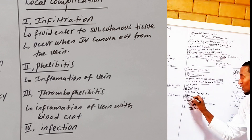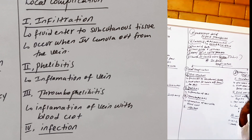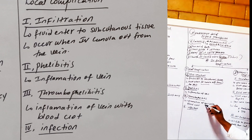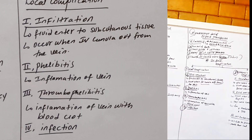The third local complication is thrombophlebitis — inflammation of the vein with blood clotting. This can develop into cardiovascular complications. The fourth local complication is infection, with signs including pus discharge, fever, hotness, and redness at the IV site.